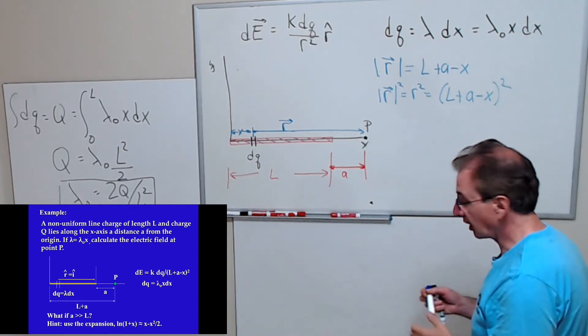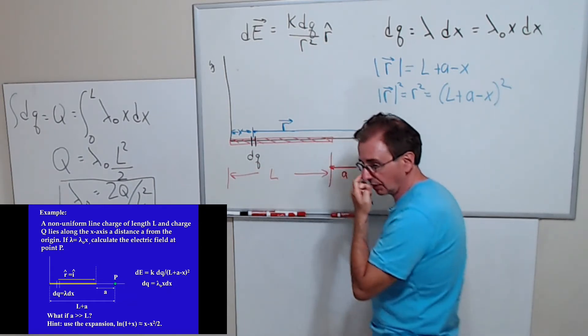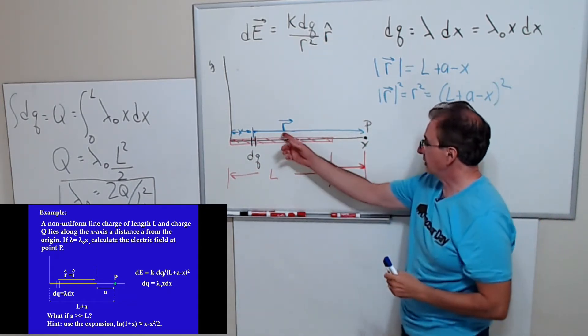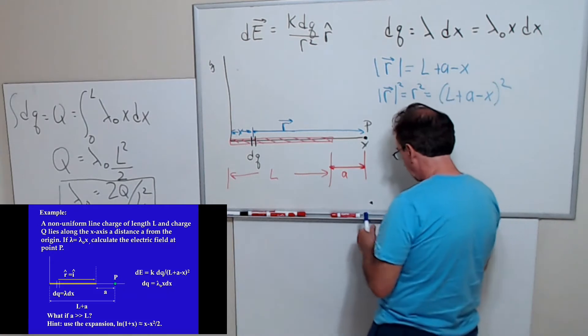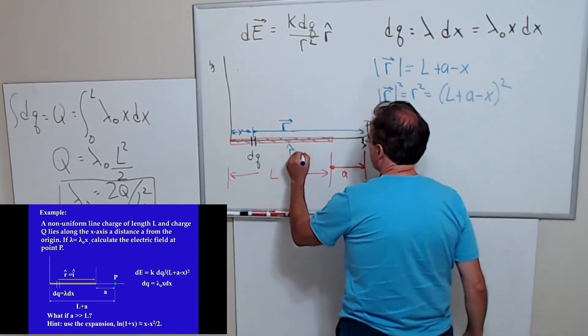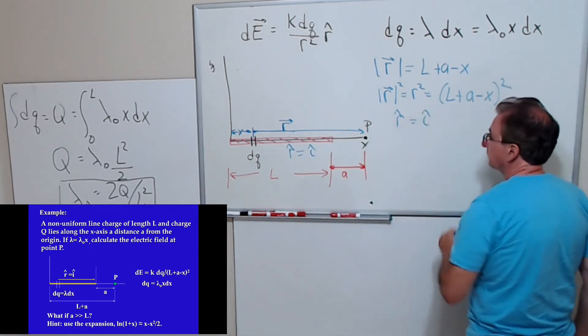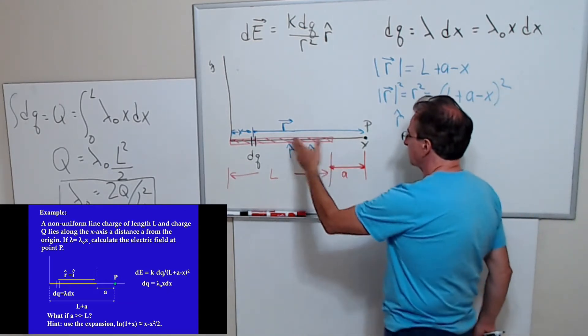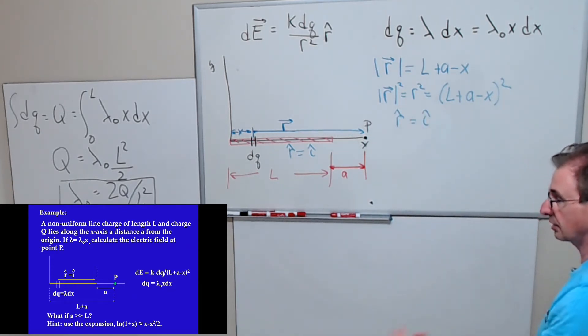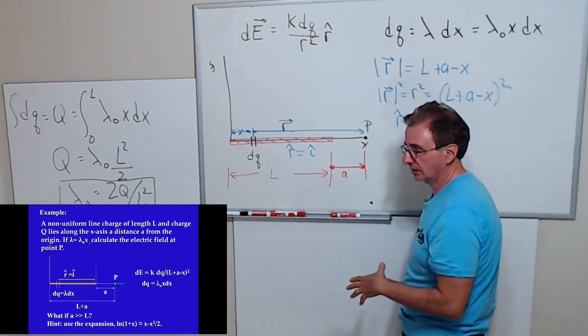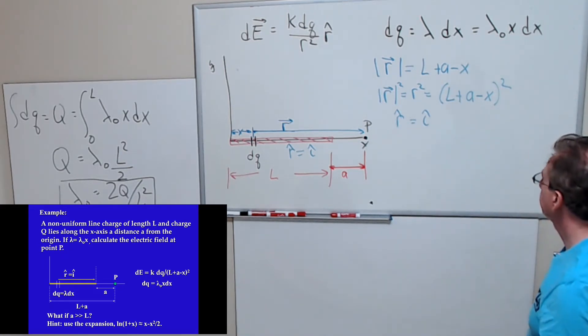Now the last thing is r hat, the unit vector that points from dQ to point P, from the source to the point in question. That's just this vector divided by its magnitude. r hat is easy to determine in this particular case. r hat is in the i hat direction. If this is positive, you can see that at point P, the electric field is going to point in positive x direction, because of the fact that for a positive charge, the electric field is always directed away from the charge.